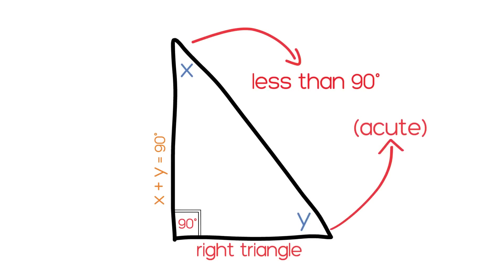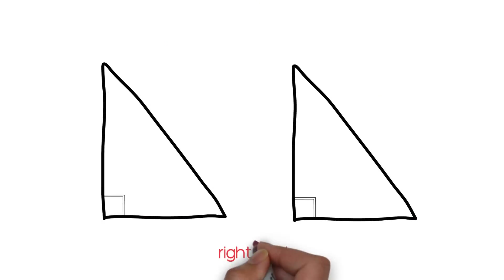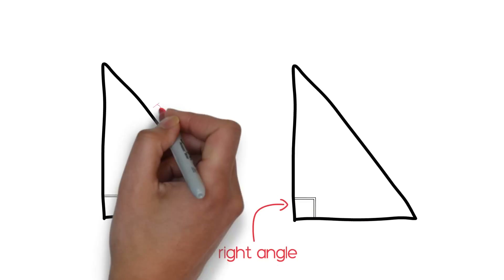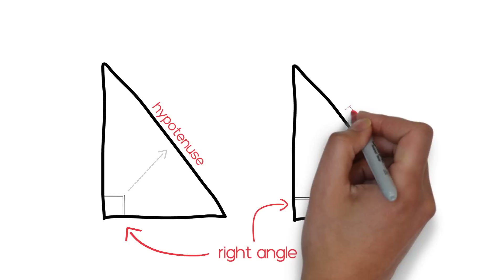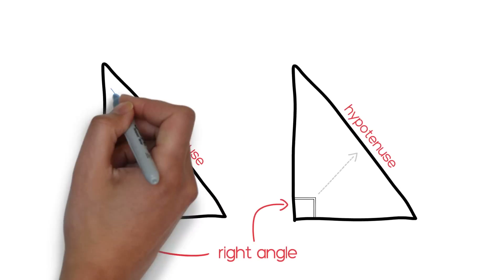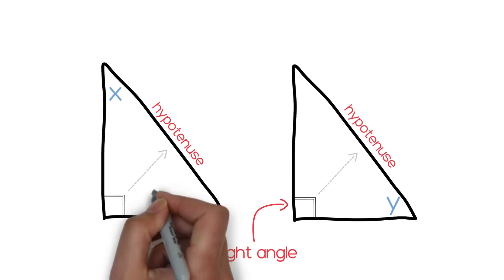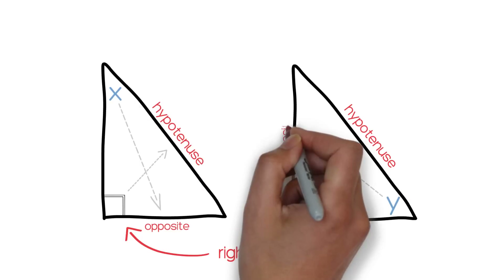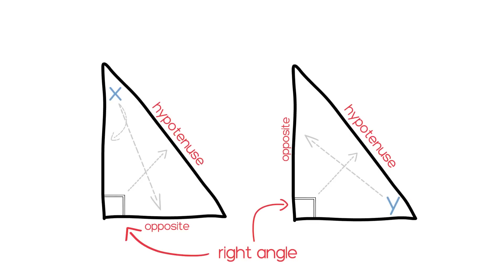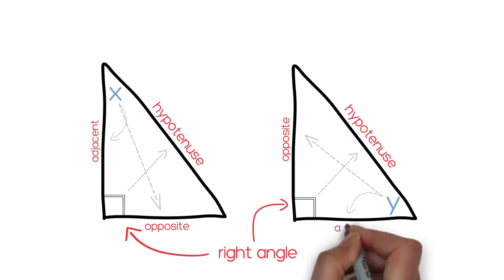The job of trigonometry is simple. It lets us figure out the measurements of angles and the lengths of legs on a right triangle. Let's quickly look at the parts of a right triangle. We know the right angle already. Opposite that is the hypotenuse, always the longest leg of a right triangle. For each of the other two angles, the leg opposite is called the opposite leg, and the closest non-hypotenuse leg is called the adjacent leg. We can use this to our advantage.